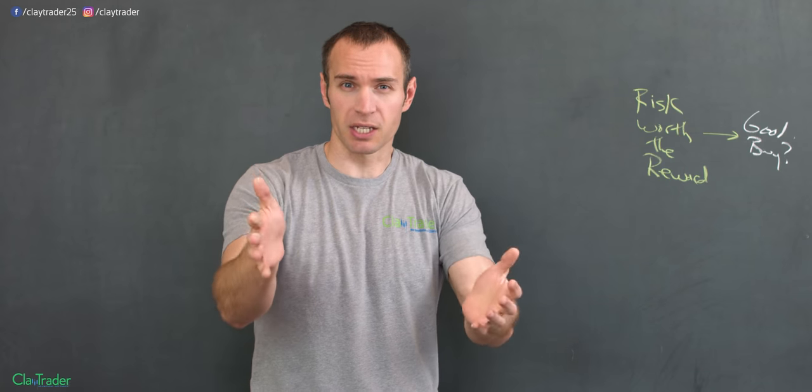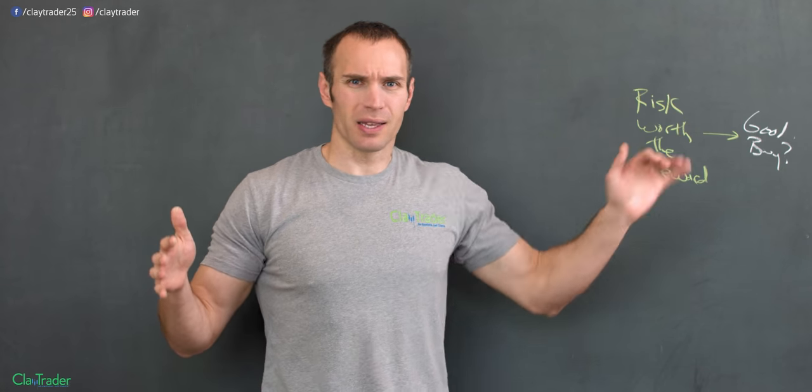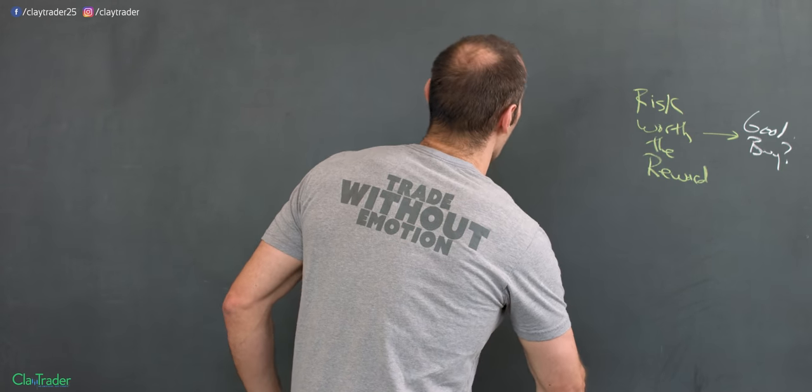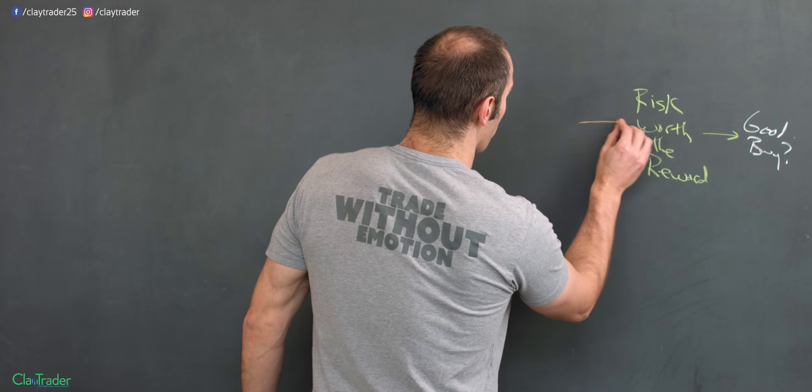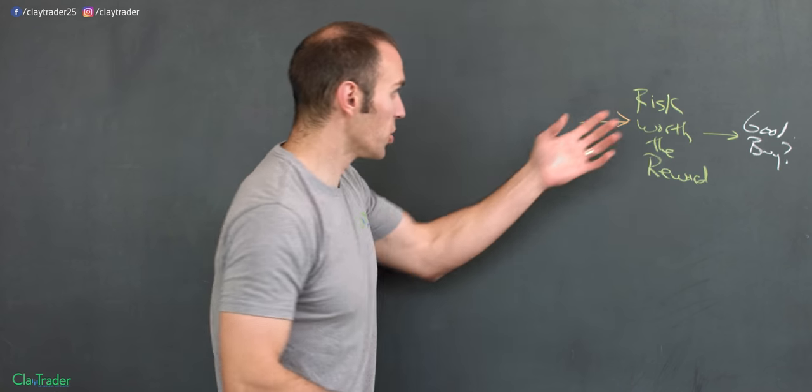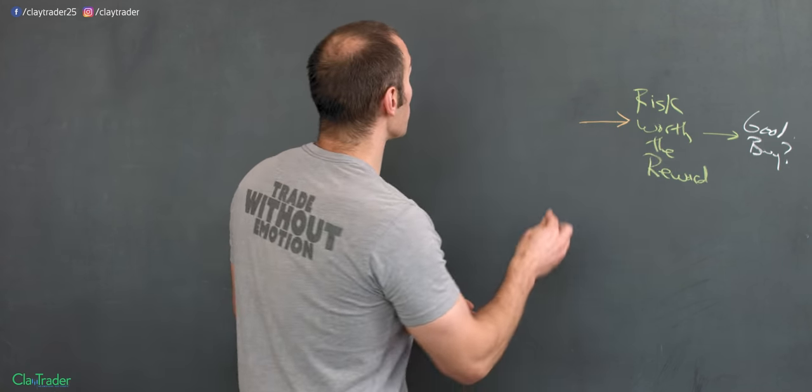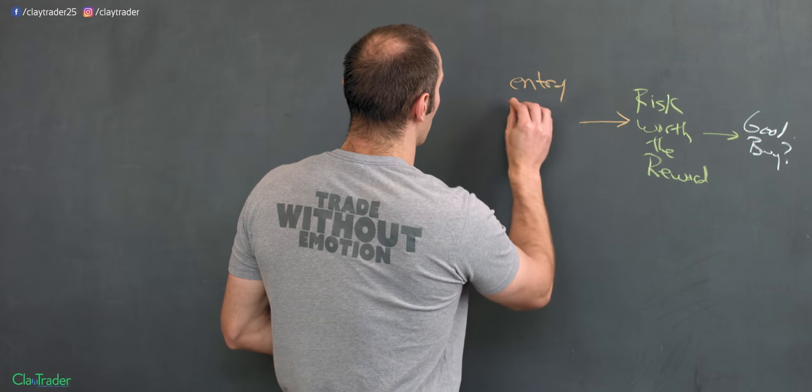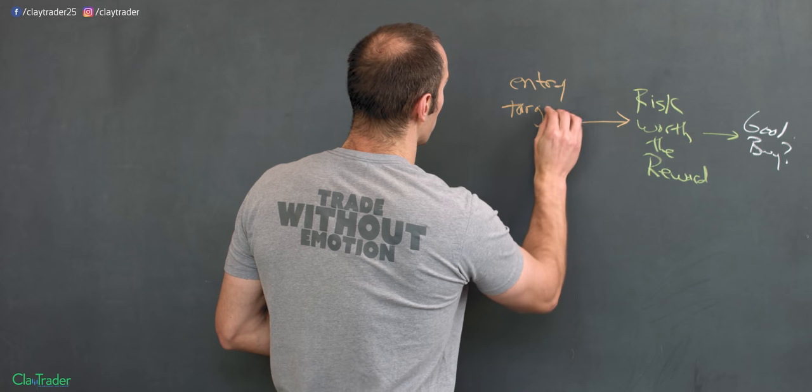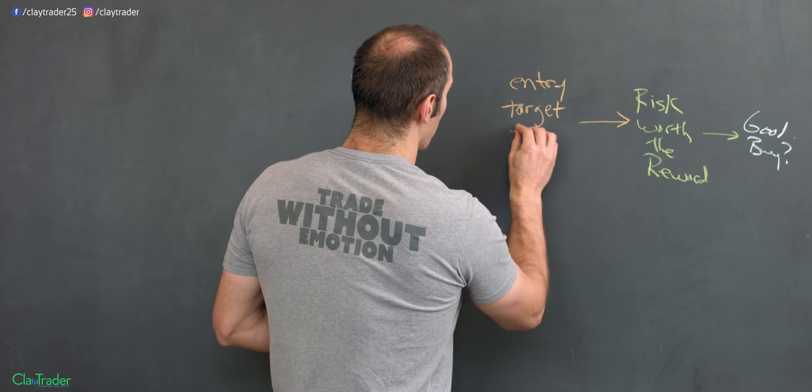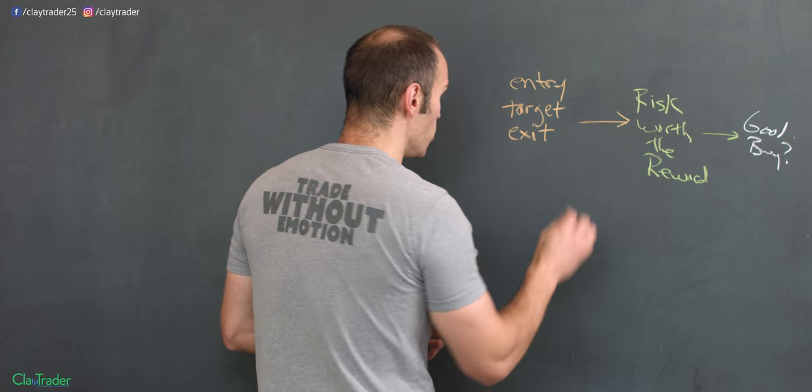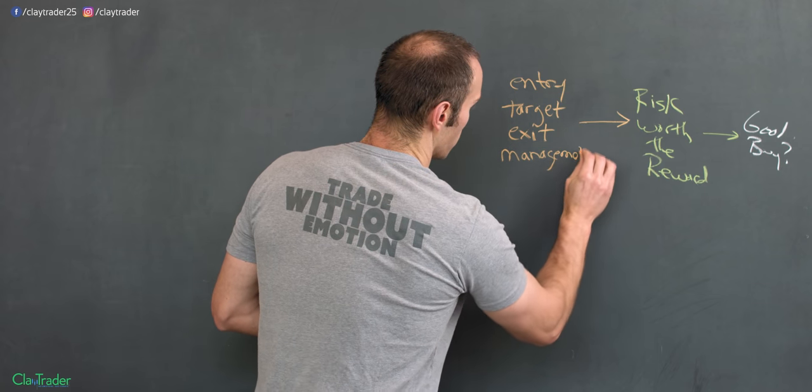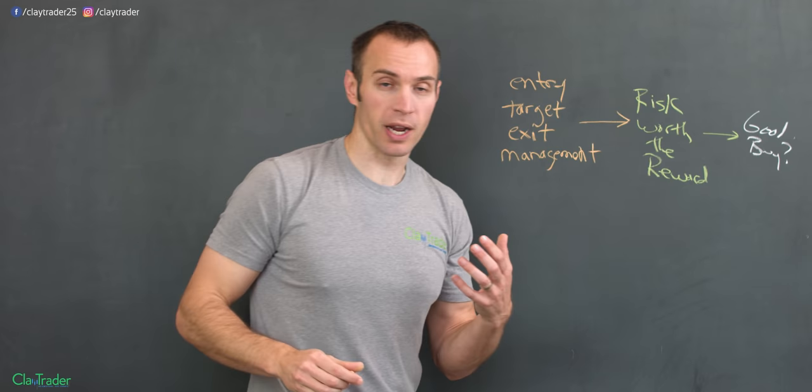So again, because it's logical to say, well, I don't know, is the risk worth the reward? I don't know. Well then let's go backwards some more. And then this is where you need to figure out, well, so how do you determine all of this? Well this is where you need to figure out an entry price goes into this, a target price goes into this, an exit goes into this, and then you need to have some sort of management. What do I mean by management? Well that's just, you know, trade management, right?